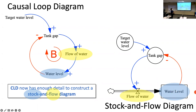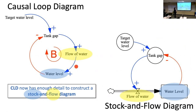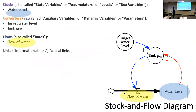That's the difference between inflow and outflow: when this is positive it causes an increase over time; an outflow being positive would cause a decrease. The water level is used to calculate tank gap by subtracting the target water level — target water level minus water level gives tank gap — and that difference drives the flow of water. This is a dynamical model of the toilet's filling behavior.